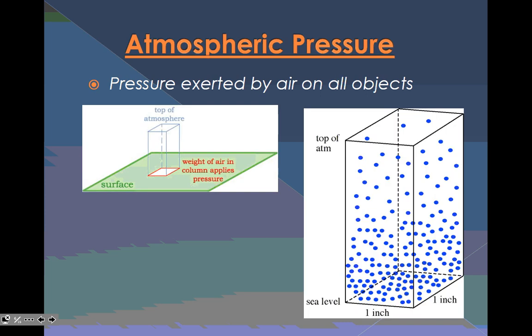Pressure exerted by air in all subjects is atmospheric pressure. And all objects. So if there's an object here, okay, pressure is going to affect this object in all directions. That's what that means.